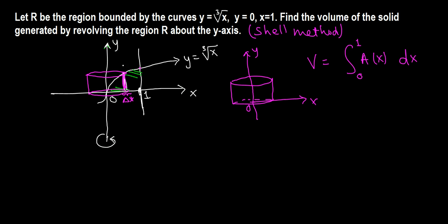This is the sample rectangle, so we need to take the coordinates. Let's say this point is (x, y), where y is given by cube root of x. So this is (x, cube root of x).